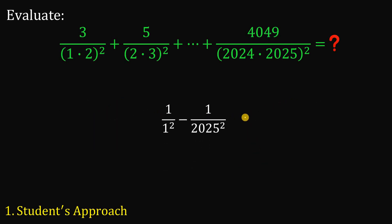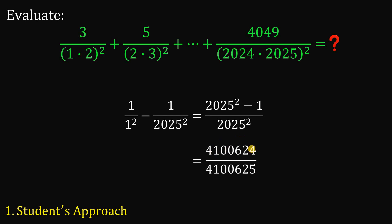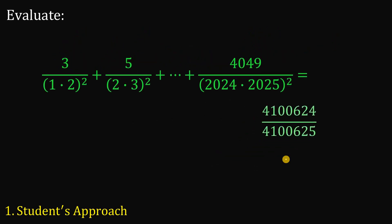If we simplify this, we get (2,025 squared minus 1) over 2,025 squared, which is 4,100,624 all over 4,100,625. That is our answer to this question.